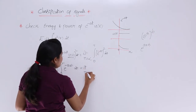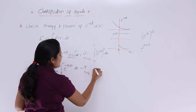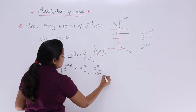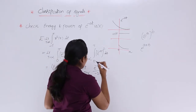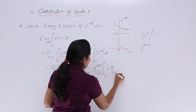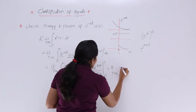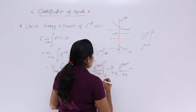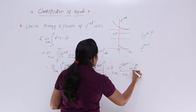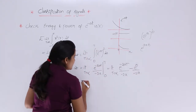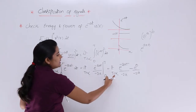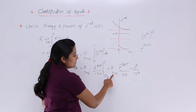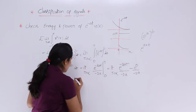Now the integral of e^(-2aT) is e^(-2aT) divided by -2A, and we substitute the limits from 0 to T. Applying the upper limit gives e^(-2A·T) / (-2A), and applying the lower limit gives e^(0) / (-2A). So the result is limit T→∞ of [e^(-2AT)/(-2A) − e^(0)/(-2A)].